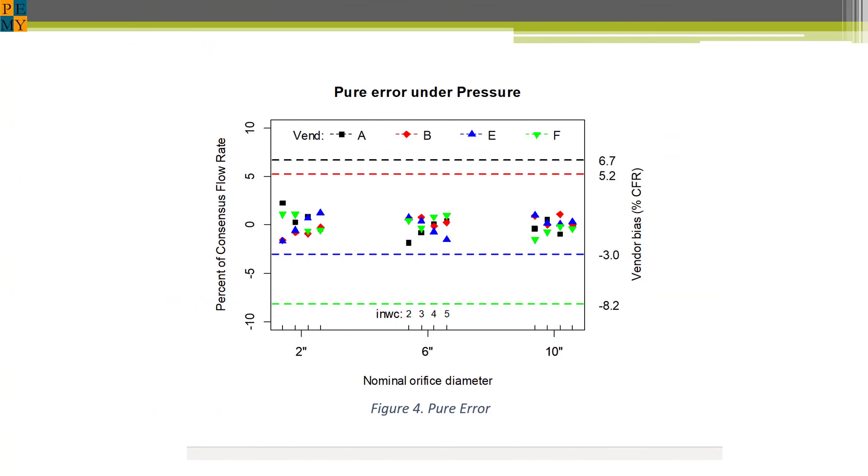If we show just pure error, which is error that cannot be accounted for by the diameter, pressure, or the interactions between vendor and pressure or vendor and diameter, we are left only with random error.